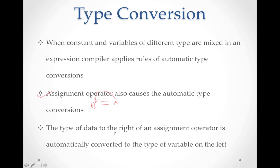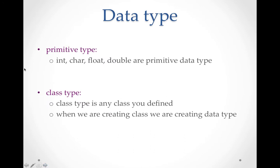For your board, you are having that much content only. I am giving you somewhat more to explain the types of conversion. So next we will move to data types. First one is primitive — primitive means by default it is built-in. Int, char, float, double — these are the primitive data types in C++.